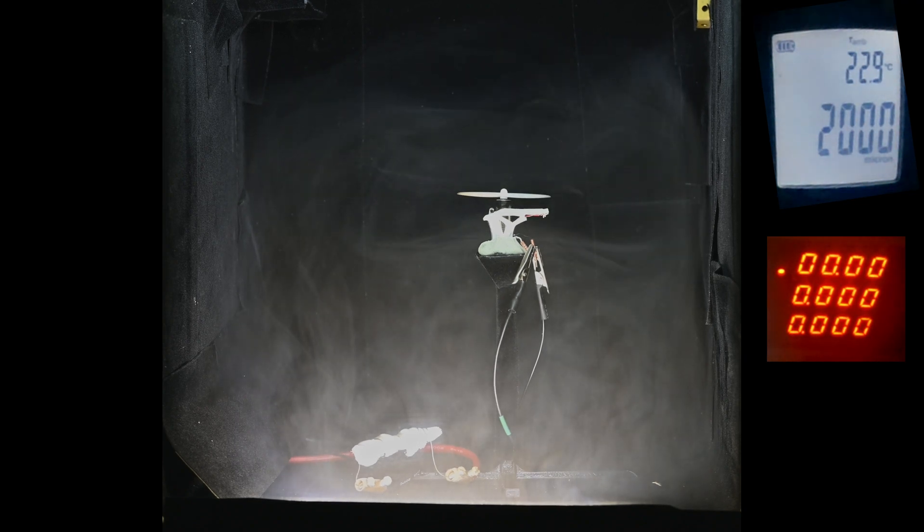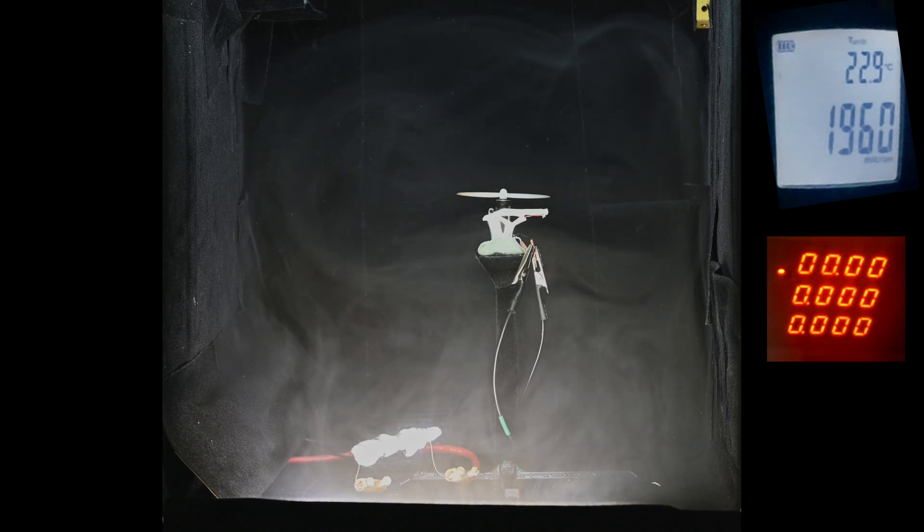You can see when the fan is at the right speed it seems to set up a stable system of currents. You can even see at some points what looks like vortex ring states being shown.